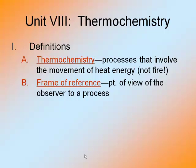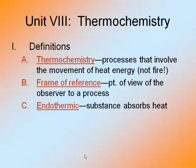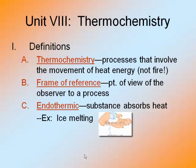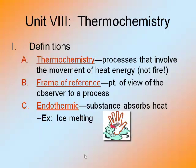Now we're going to get into two processes that we have touched upon before. You saw these when you did the heating and cooling curve. The first one is endothermic. Endothermic is a process where the substance absorbs heat. The best example is ice melting. Heat has to go into the ice cube in order to break or weaken those intermolecular forces that are keeping the thing as a solid. So heat is being transferred from your hand into the ice cube.